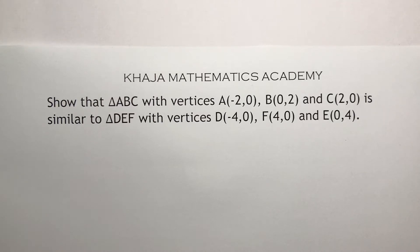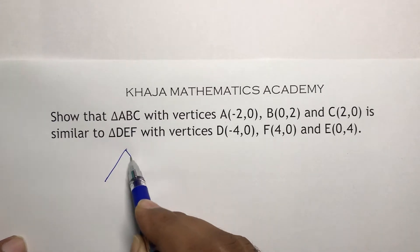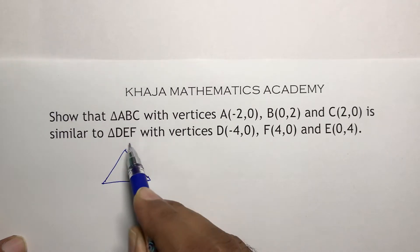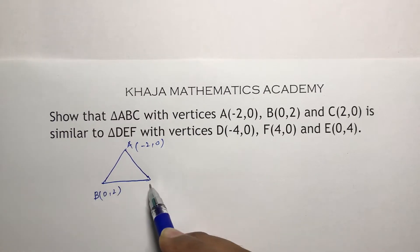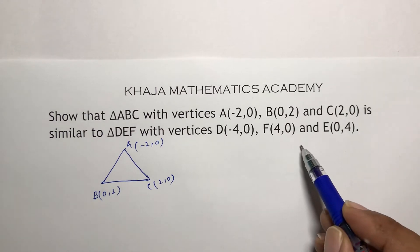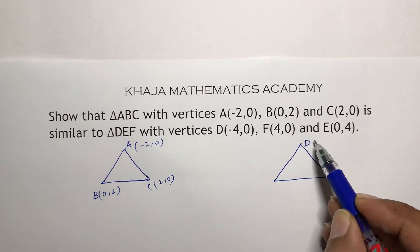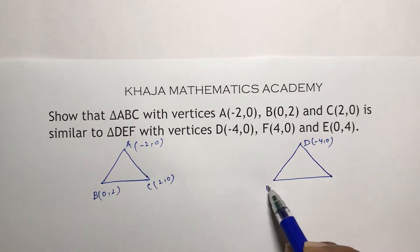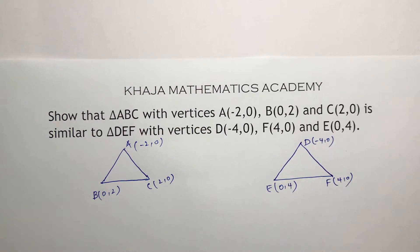Triangle ABC with vertices A(-2, 0), B(0, 2), C(2, 0) is similar to triangle DEF with vertices D(-4, 0), E(0, 4), and F(4, 0). So here we have two triangles: ABC and DEF.